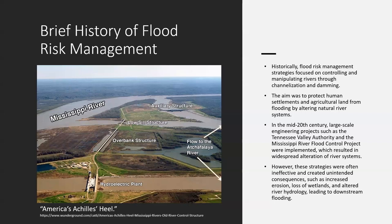Let's take a quick look at a brief history of flood risk management. Historically, strategies focused on controlling rivers through channelization and damming to protect human settlements and agricultural lands. In the mid-20th century, large-scale engineering projects such as the Tennessee Valley Authority and the Mississippi River Flood Control Project were implemented, resulting in widespread alteration of river systems. However, these strategies led to increased erosion, loss of wetlands, and altered river hydrology, causing downstream flooding. The Mississippi River is actually referred to as America's Achilles' heel, as it has proven ineffective at preventing flooding.